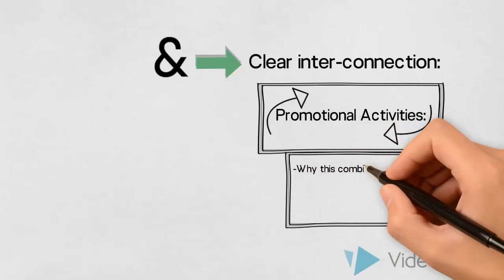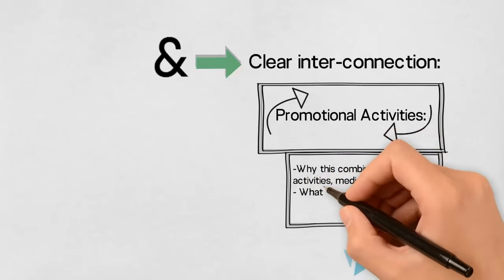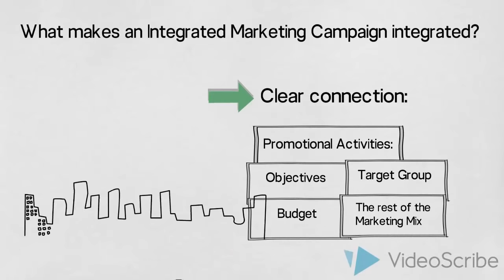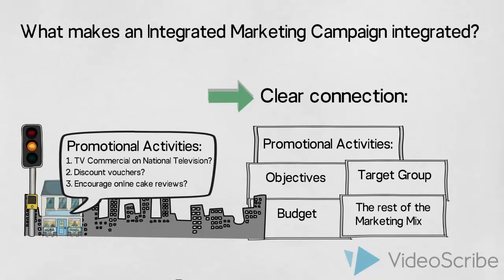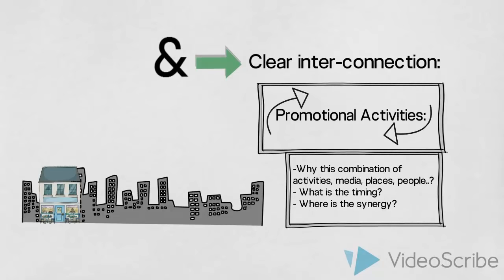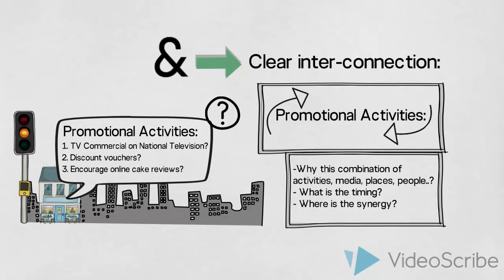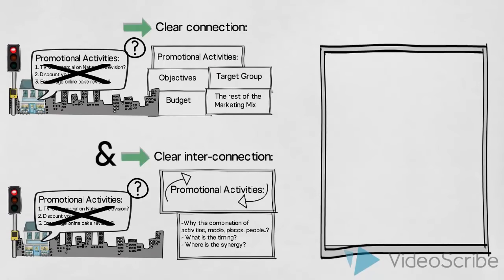Maybe the different activities are aimed at different parts of the target group? Has timing been considered? Or maybe they engage with the target group in different ways — in different situations, at different times or in different places? Is there perhaps a combination of online and offline activities? Does the combination of activities create synergy? So let us look at the promotional activities suggested by the owner of the French Cafe. Do they integrate with the objectives, the target group, budget and the marketing mix? Do the promotional activities interconnect? Has timing or synergy been considered? We can probably agree that we should be able to come up with a more integrated campaign than this.